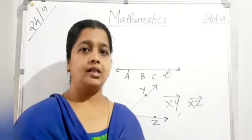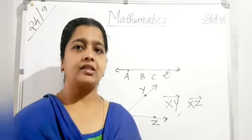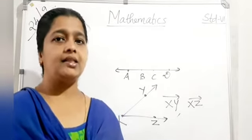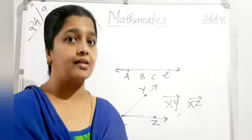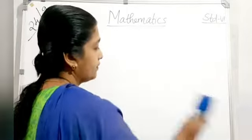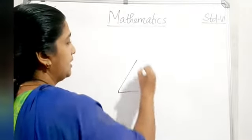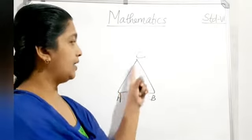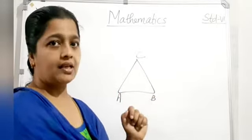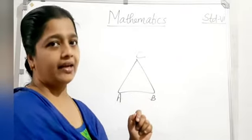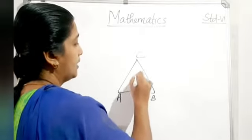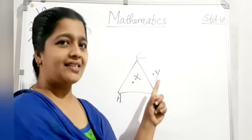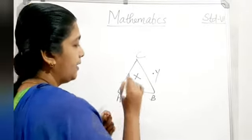A curve is said to be closed if it forms a closed figure; otherwise it is an open curve. A polygon is a simple closed curve made up of only line segments. For a triangle ABC, there are three angles A, B, C and three vertices A, B, C. Sides AB, BC, and CA are the sides. Point X is interior to the triangle and point Y is exterior.